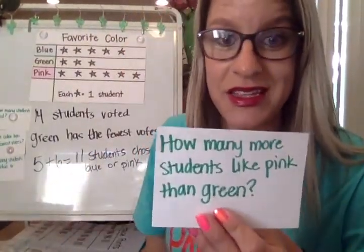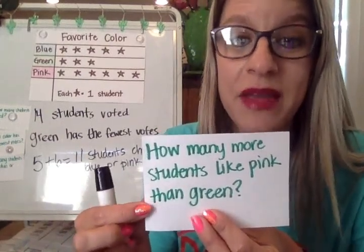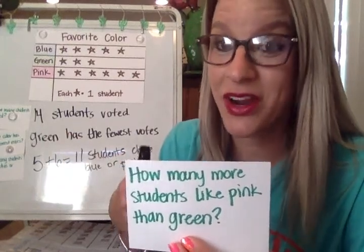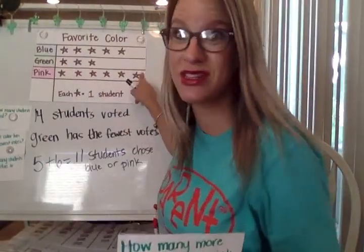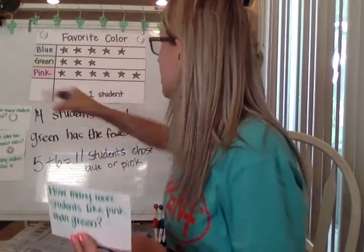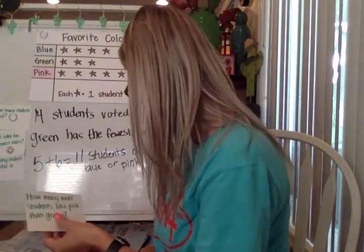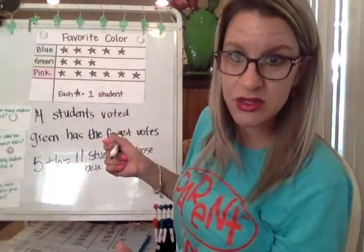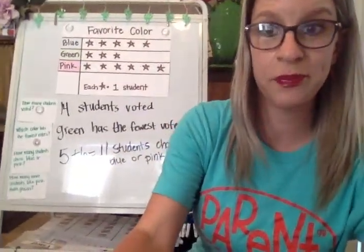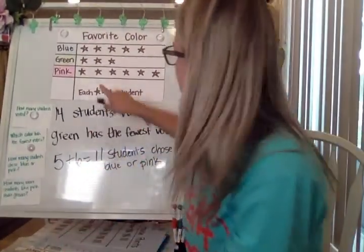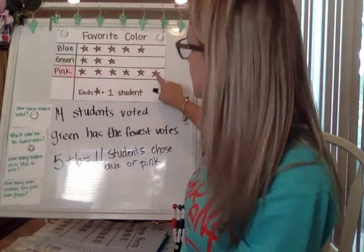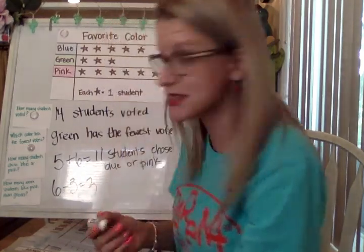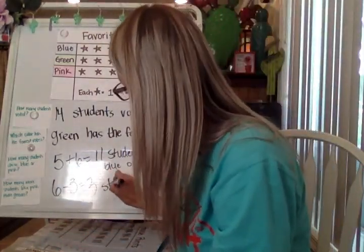Here's another question — you'll see this question stem a lot: how many more students like pink than green? You can see that more students like pink; it's the most favorite of all the colors chosen. Pink has 6, and green has 3. So the equation is 6 minus 3, which equals 3. So 3 students more liked pink than green.